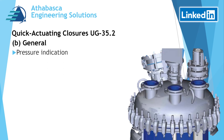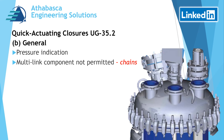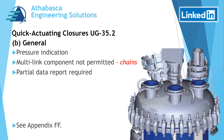There must be some kind of pressure indication — for example, a pressure gauge on the assembly is required. Multi-link components such as chains are not permitted for quick opening closures. A partial ASME data report is required for this type of design. Appendix FF contains instructions about operating procedures and conditions required to design a quick actuating closure.